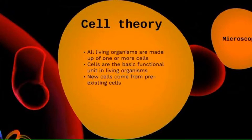There are three main parts to the cell theory. Number one is that all living organisms are made up of one or more cells. Two is that cells are the basic functional unit of all living organisms. And three, that new cells are produced from pre-existing cells — so cells don't just come out of nowhere, they have to come from a pre-existing cell.